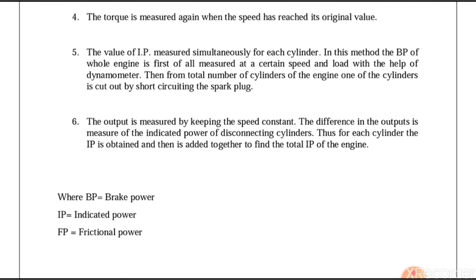Then the output is measured by keeping the speed constant. The difference in output, measured as indicated power with respect to disconnecting cylinders, can be noticed. Thus for each cylinder the IP is obtained and then added together to find the total indicated power of the engine.